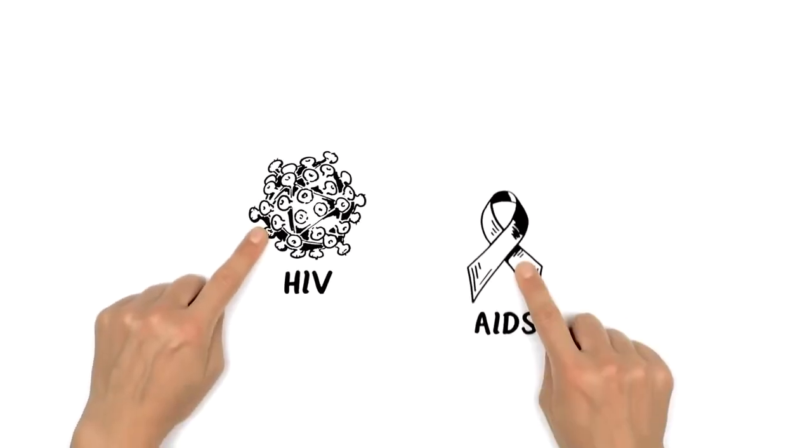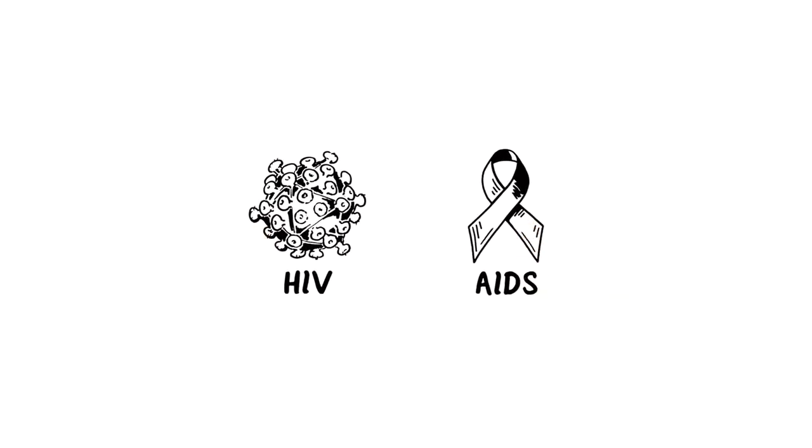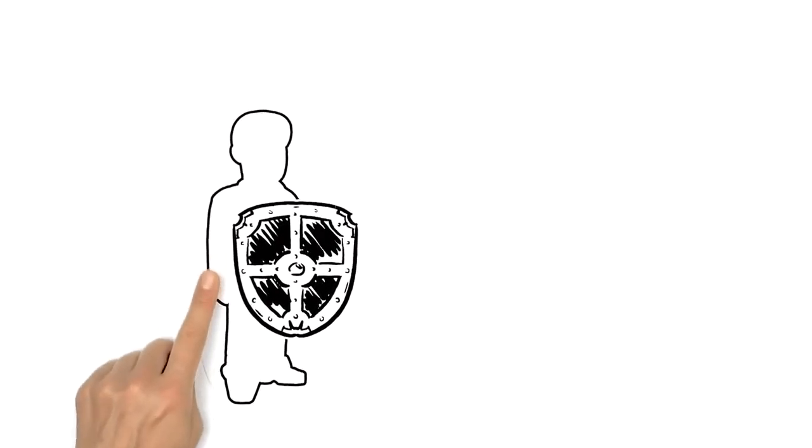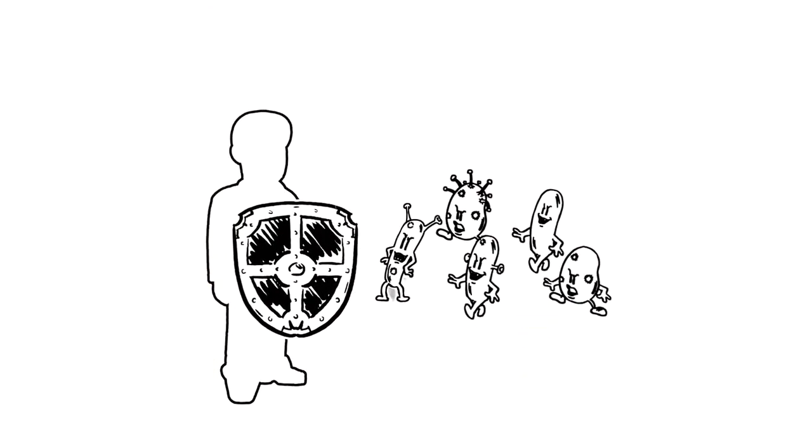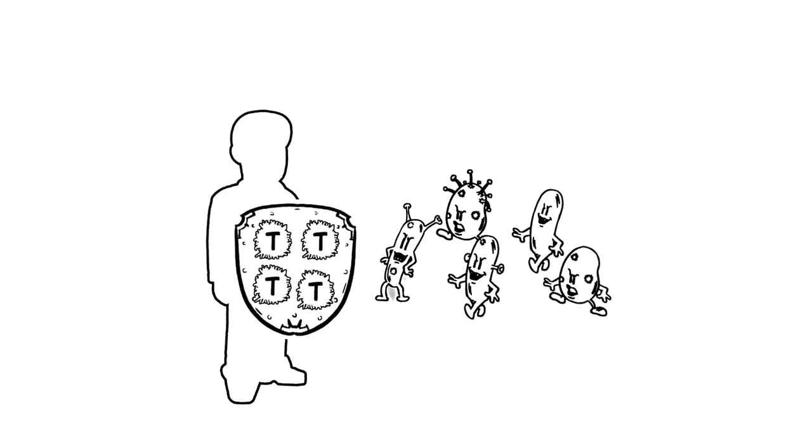We explain HIV and AIDS. The human immune system defends the body against illnesses all the time. It uses guards in the blood called T-cells to recognize any intruders and destroy them.